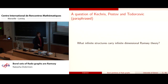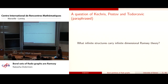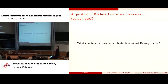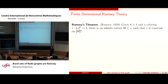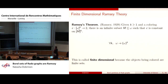This work is addressing a question in the Kechris-Pestov-Todorčević paper which, paraphrased, asks: what infinite structures can carry infinite dimensional Ramsey theory? Finite dimensional Ramsey theory is what you may know as the infinite Ramsey theorem — we call it finite dimensional because the objects being colored are finite sets, even though we're finding an infinite subset where there's one color.